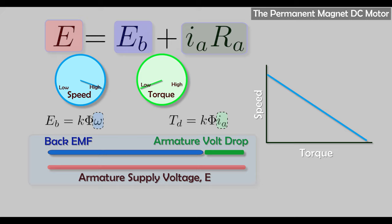Let's look at the mechanism by which the motor transitions along its characteristic curve. Starting at no load — no torque, so armature current is zero. If the load increases, the mechanical torque exceeds the electrical torque, the motor slows down, and the back EMF (proportionate to speed) drops. If back EMF drops, armature current increases, which increases torque until we reach a new steady state. So we've gone from operating point one at no load to operating point two with higher torque and lower speed.